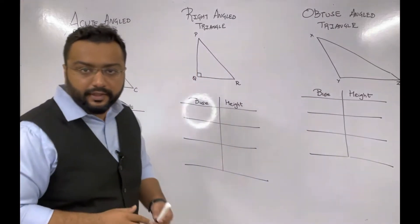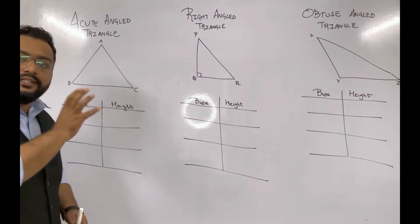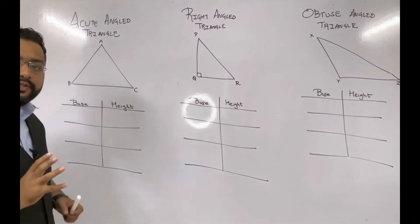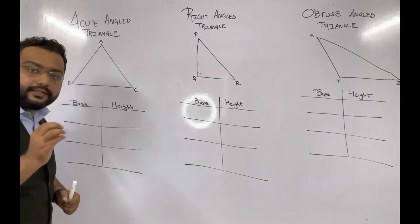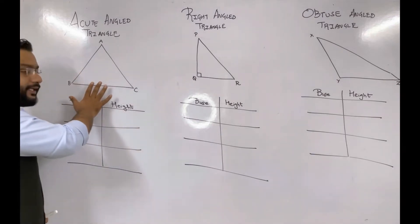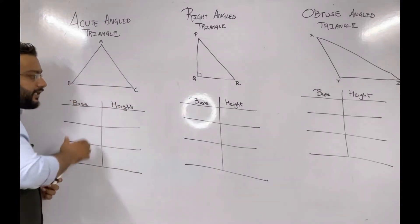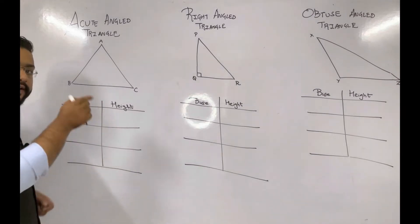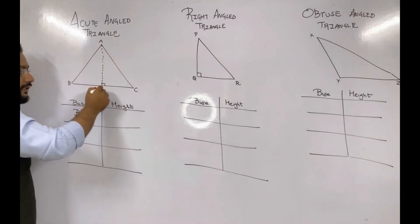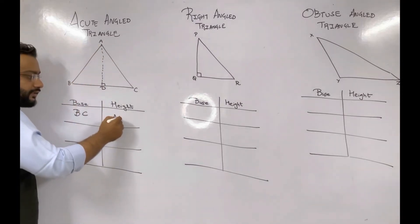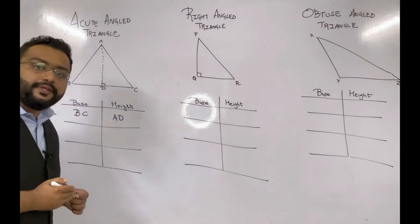In triangle ABC you can take any side as the base — it is up to you. The height is perpendicular, but the base is never perpendicular. If I take BC as the base, the height will start from its opposite vertex. Whenever you select any side as base, its height always starts from the opposite vertex. The opposite vertex of BC is A, so from A we draw a perpendicular and name it D. So AD is the height corresponding to base BC.